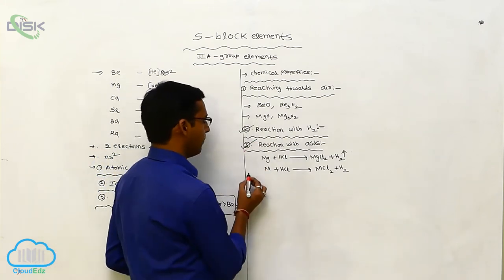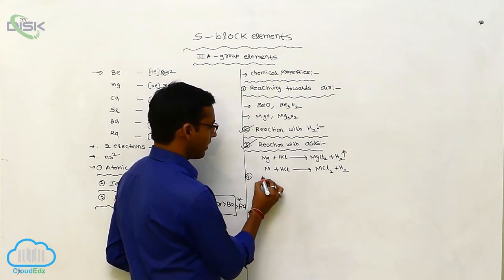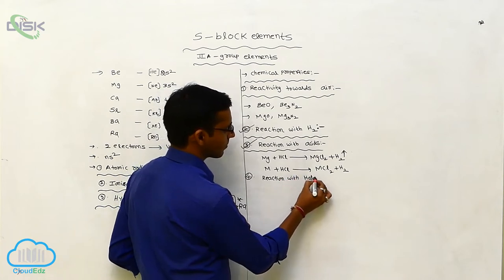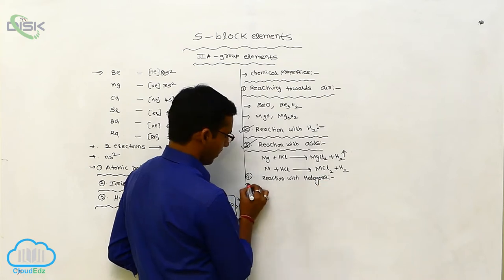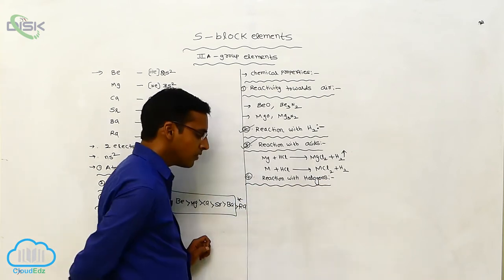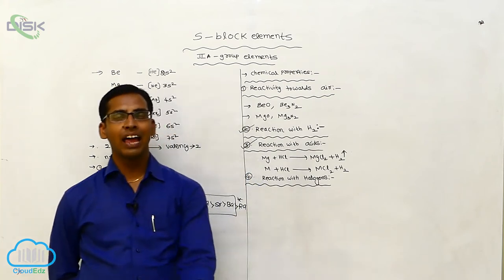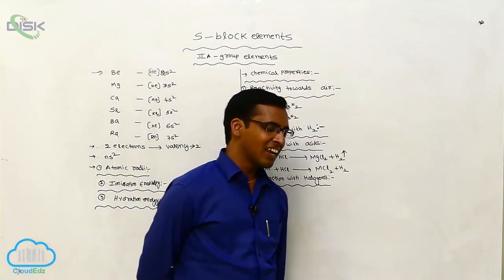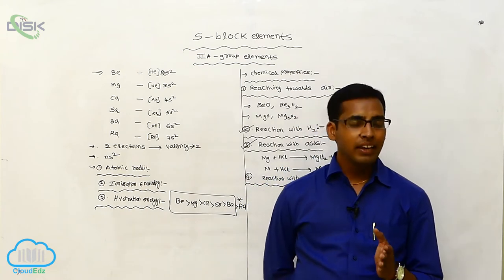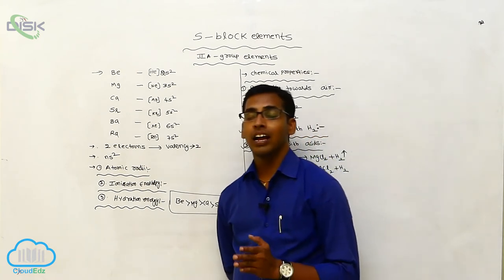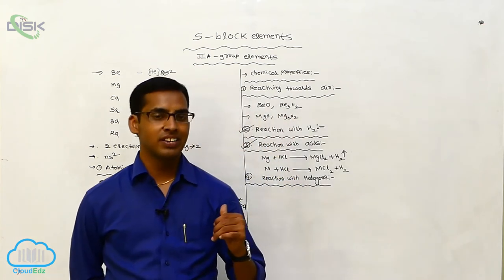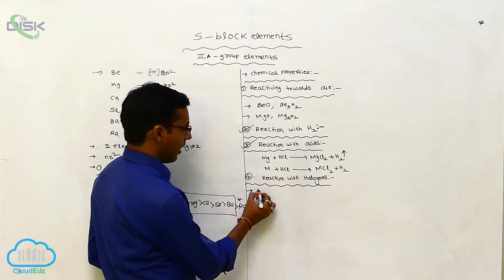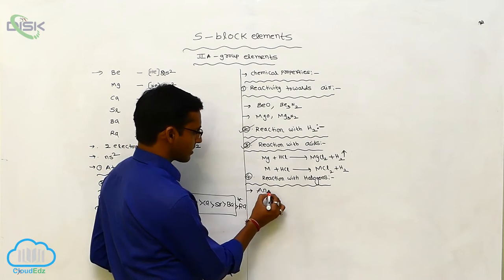That is the third property. The fourth property is reaction with halogens. When Group 2A elements react with halogens, they form metallic halides. Except for beryllium halide, all remaining metallic halides are ionic in nature. Beryllium halide is covalent in nature.